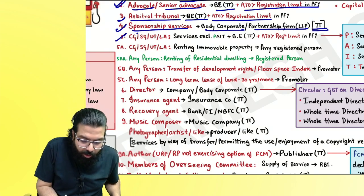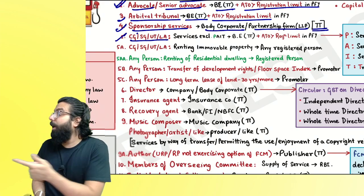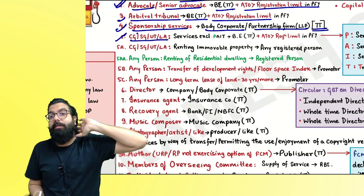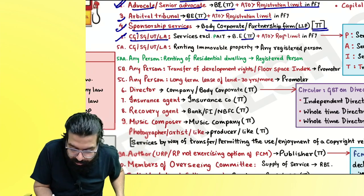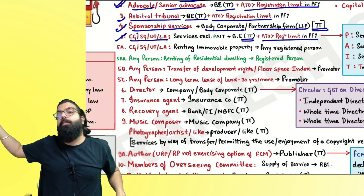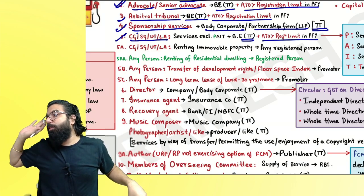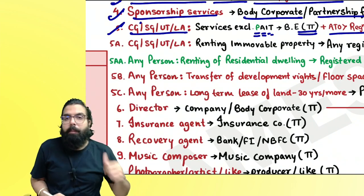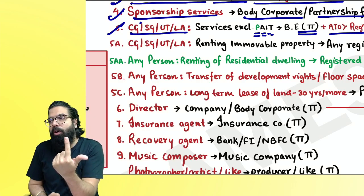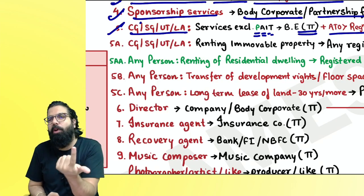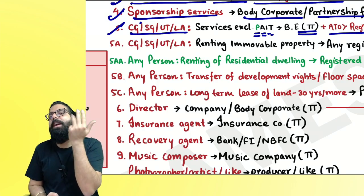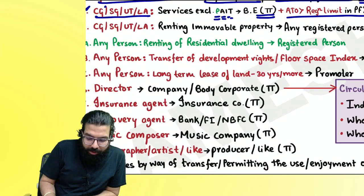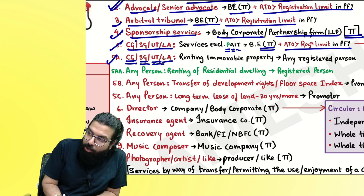Central government, state government, union territory, or local authority giving any services to a big business entity where the amount is more than ₹5,000 — RCM applies. This is not applicable for services related to: Post (PAIT), Department of Post, aircraft or vessel, airport or port, immovable property or renting of immovable property, and transportation of goods or passengers.